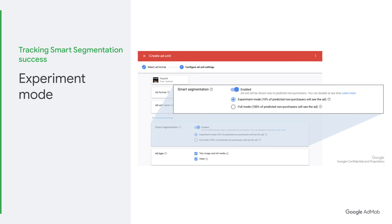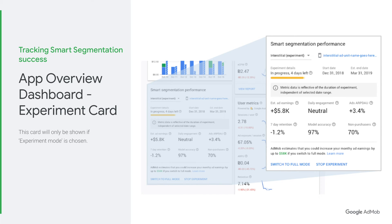We also offer an experiment mode, which will roll out the Smart Segmentation ad units to only 10% of your users. This A/B testing feature will allow you to compare and accurately pinpoint whether Smart Segmentation works for you or not. If you choose to run experiment mode, you will have a dedicated card on the app overview dashboard that allows you to see the performance of the Smart Segmentation ad unit versus your non-Smart Segmentation units. If you're satisfied with the performance, you can switch to full mode — which fills 100% of your Smart Segmentation ad units — or stop the experiment, which pauses serving of Smart Segmentation units.